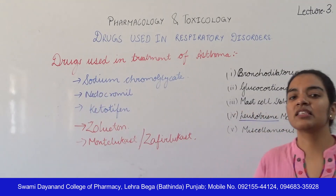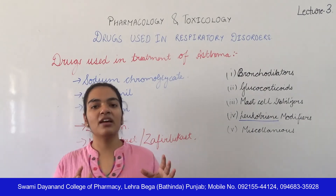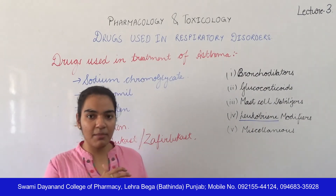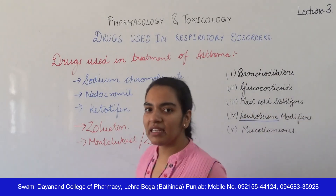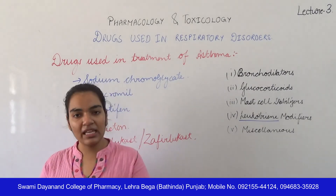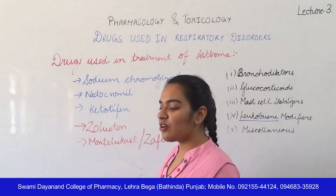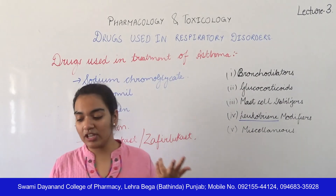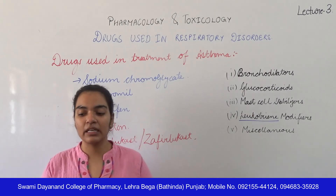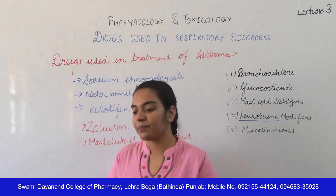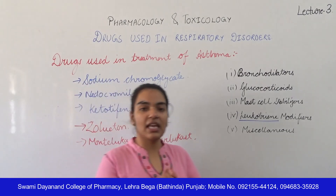The last type of asthma is status asthmaticus, which is a severe or sustained asthma attack. In these patients, standard bronchodilators or sympathomimetic amines may not be effective. It is a medical emergency. The patient experiences difficulty in breathing, cyanosis, dehydration, respiratory acidosis due to accumulation of carbon dioxide, and patient exhaustion. Rehydration and antibiotics are used to control infection.